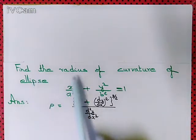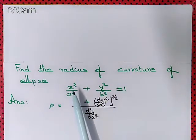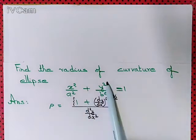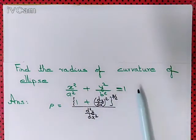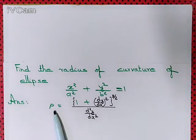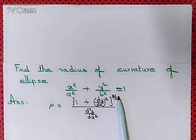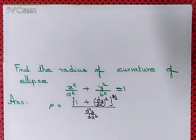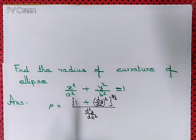Let us find the radius of curvature of the ellipse x²/a² + y²/b² = 1. We may be tempted to use the formula rho = (1 + (dy/dx)²)^(3/2) / (d²y/dx²), but it will be much easier if we change the equation of the ellipse into parametric form.